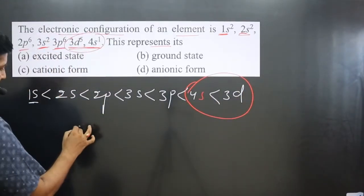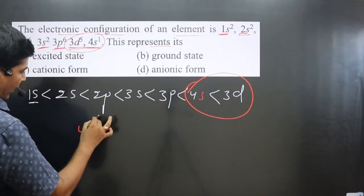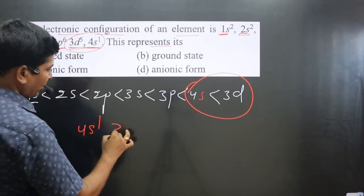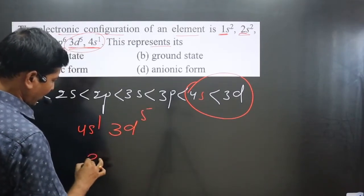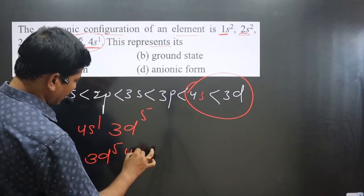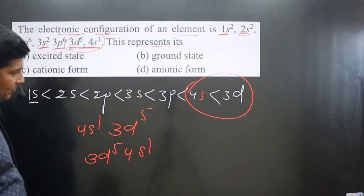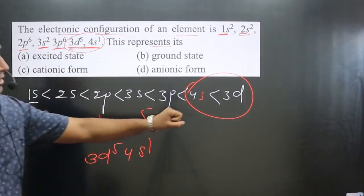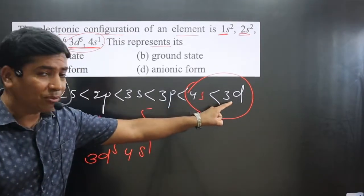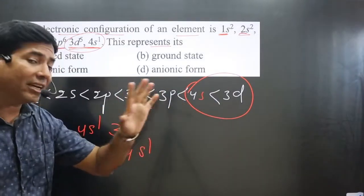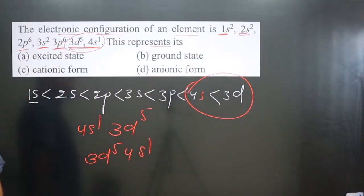You can see we have 4s1 and then we have 3d5. You can write it as 3d5 and 4s1 as well. If you compare the energy, the 3d orbital has higher energy than the 4s orbital.